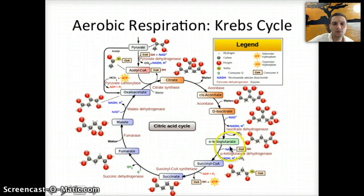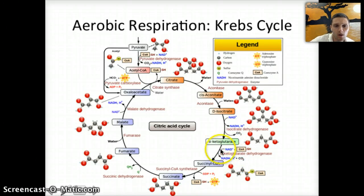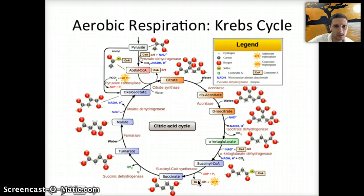This process occurs a second time, in which a second NAD+ is reduced to NADH and a second CO2 molecule is also released. That leaves us with a four-carbon molecule. The coenzyme A enzyme is released and gets recycled and reused back in the link reaction. We're left with succinate, which is the four-carbon molecule that continues on in this process.